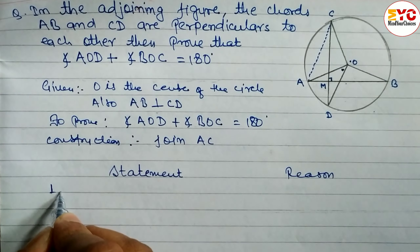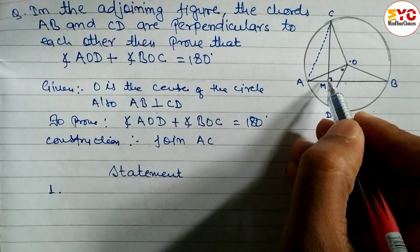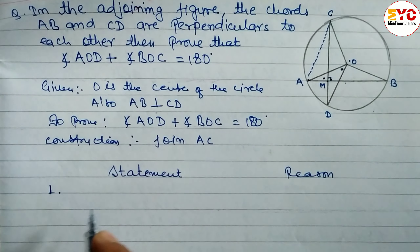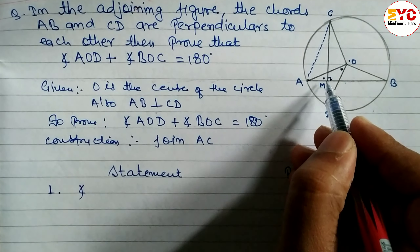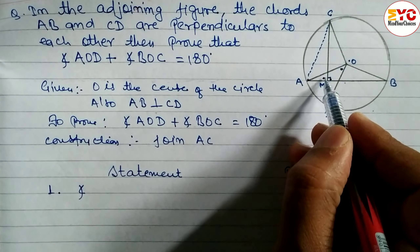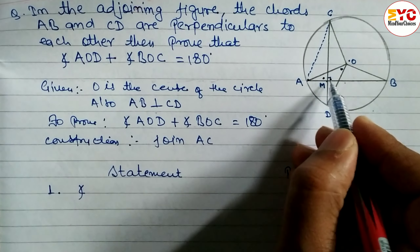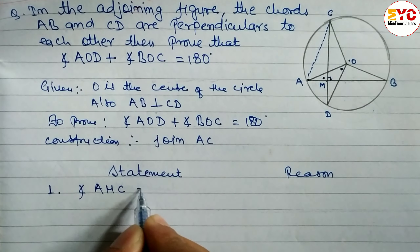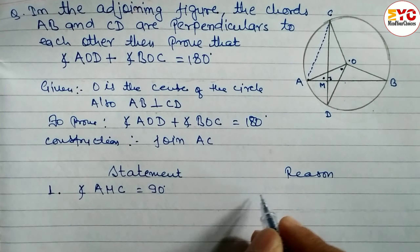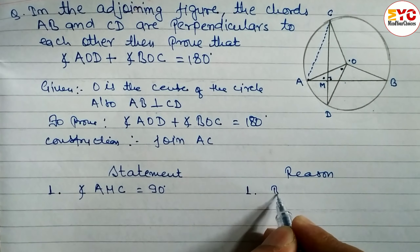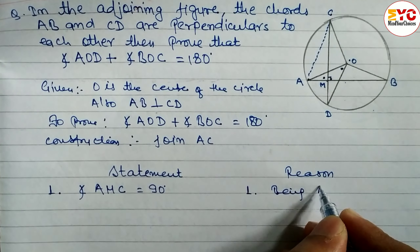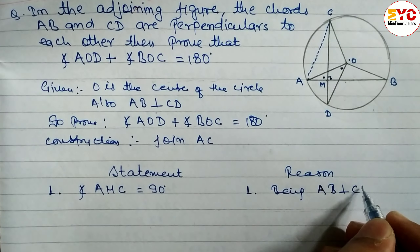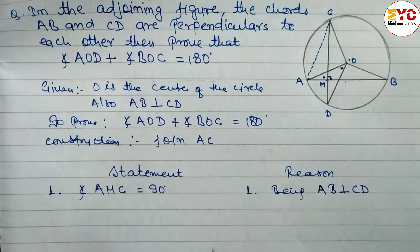Statement 1: You can see here, if this angle is 90°, this is also 90°. So we write: angle AMC = 90°. Reason: AB perpendicular to CD — since AB and CD are perpendicular, the angle is 90°.